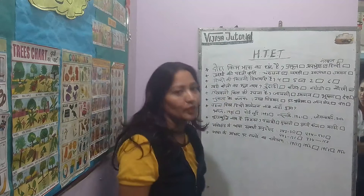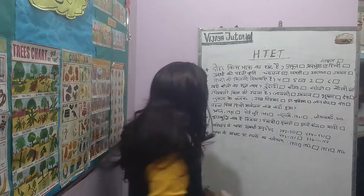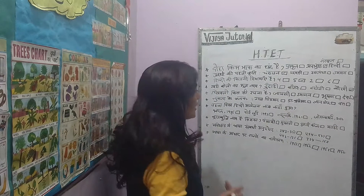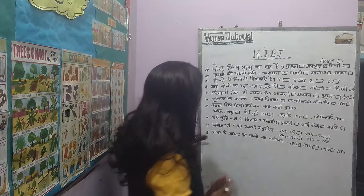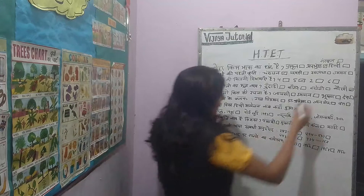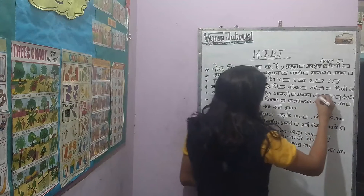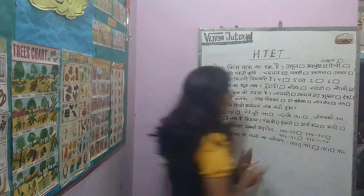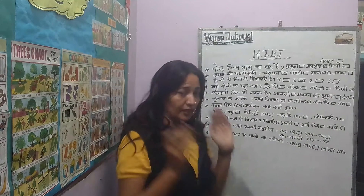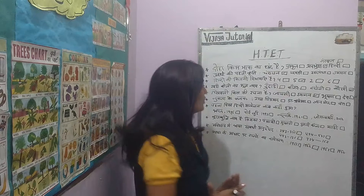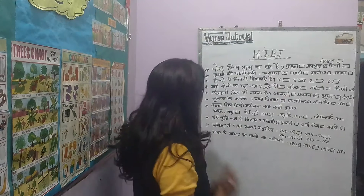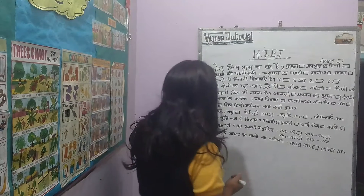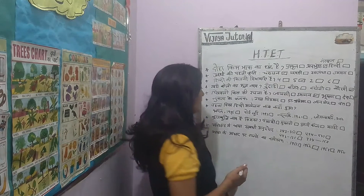Chitravali is a rachna (literary work) by Usman. Usman ji is a stambh (pillar) of Hindi literature, and Chitravali is his well-known composition.